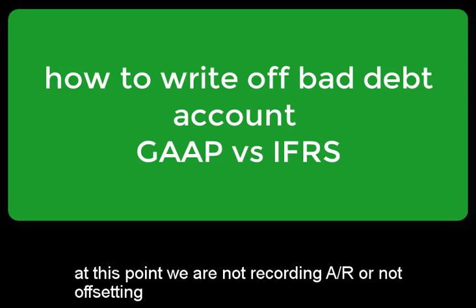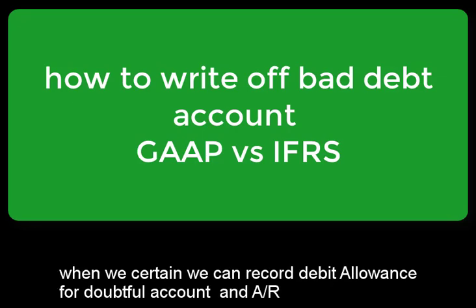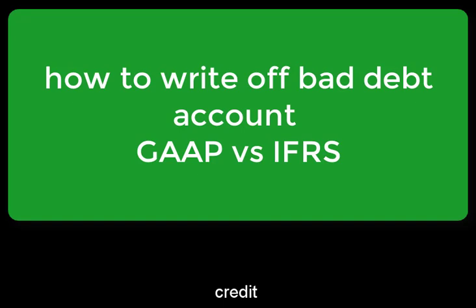Now it is the account receivable. If you use account receivable, the write-off is either a direct method or allowance method. The direct method is actually a direct method.